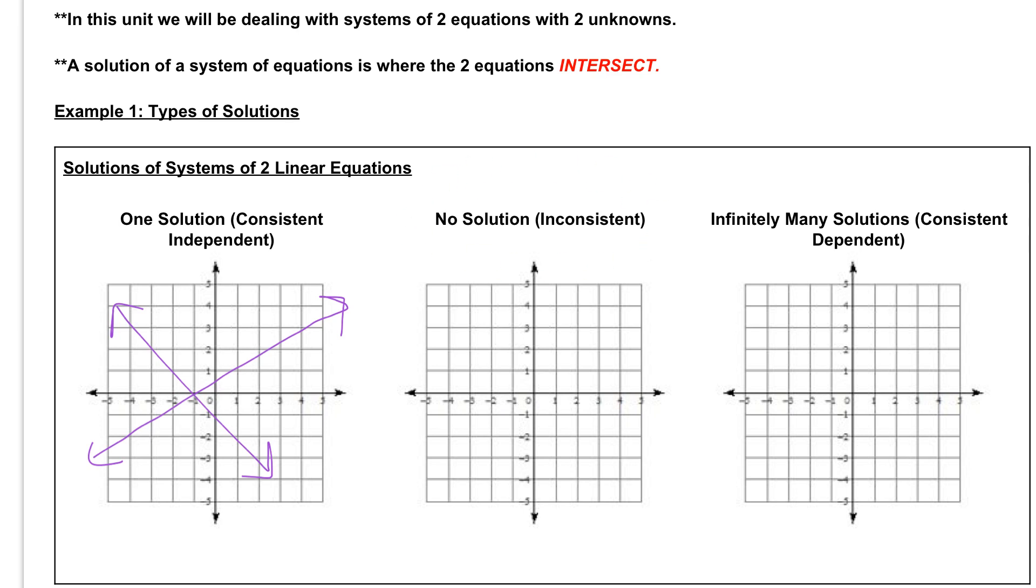If we have the second kind, which is no solution, this means on ALEKS they call it inconsistent. So an inconsistent system means it never intersects. The only lines that will never intersect are parallel lines. So you would have two parallel lines that would never intersect. Since they're not intersecting, there's no solution. There's no common point between the two of them.